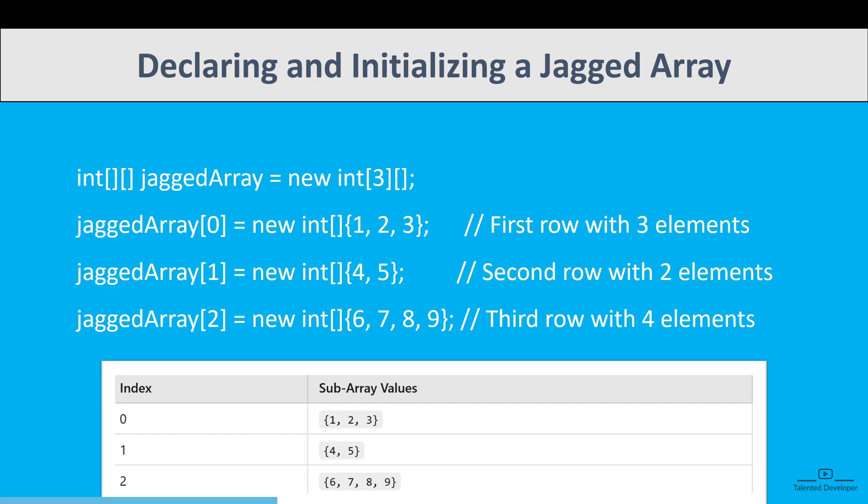So you can see, at index 0 we have 1, 2, 3; at index 1 we have 4, 5; and at index 2 we have 6, 7, 8, 9. If I want to access the value 2, how can we access it? We can access it like jagged array[0][1], which will give the output as 2 because the row is 0 and column is 1.